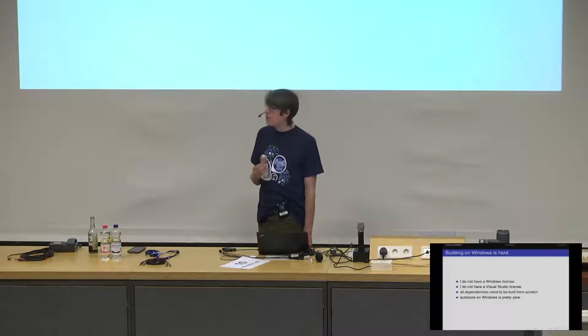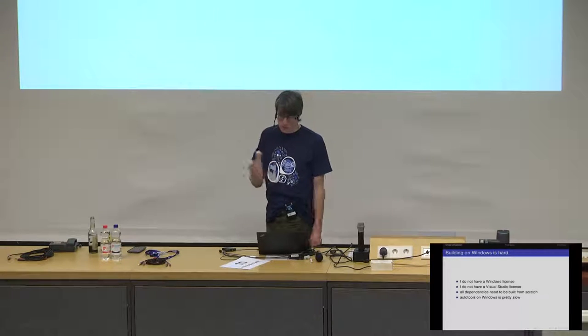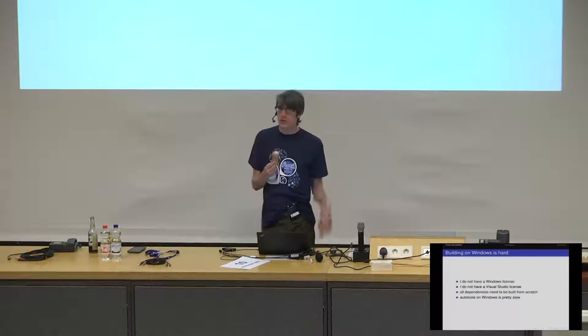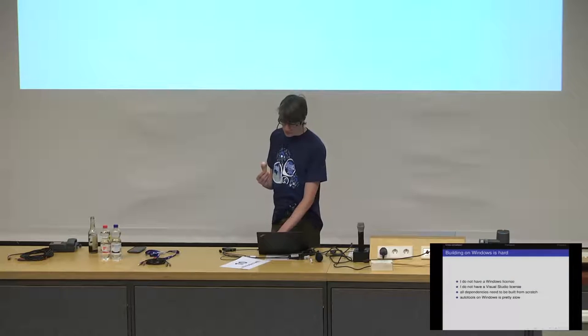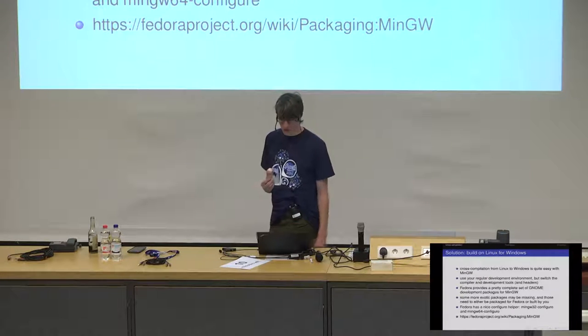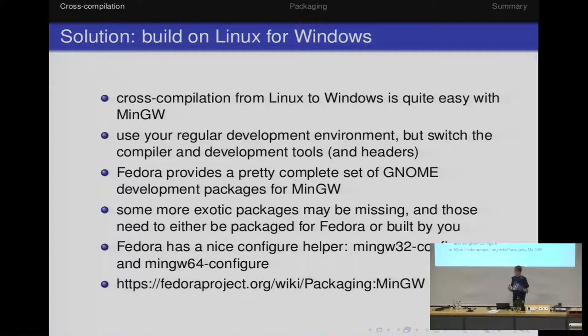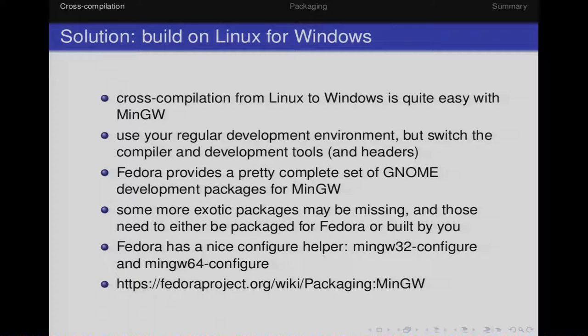Wouldn't it be great if someone had already done this for you? It kind of turns out they have. Also, a lot of projects use AutoTools, and AutoTools on Windows is even slower than on Linux because it forks all the time. One possible solution — not necessarily the best one, but the one that works for me — is to cross-compile your applications from Linux targeting Windows. It's actually pretty simple. AutoTools is pretty good at handling this, as well as most other build systems like CMake. The cross-compilation stuff works okay, and there are helpers available too.